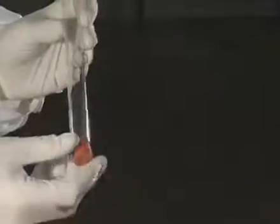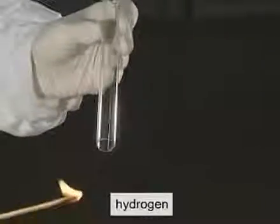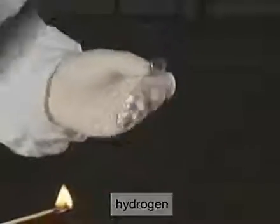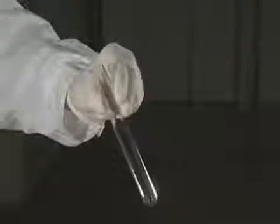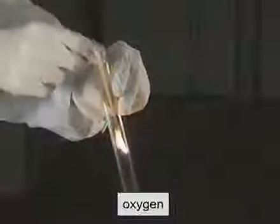The characteristic cracking sound proves that the gas released at the cathode is hydrogen. The ignition of the glowing splint is evidence that the gas collected from the anode is oxygen, which supports combustion.